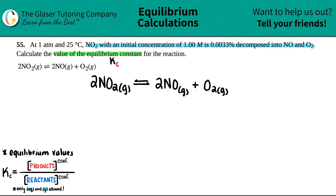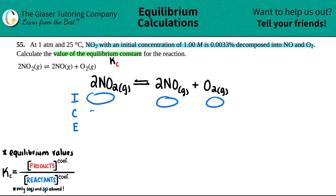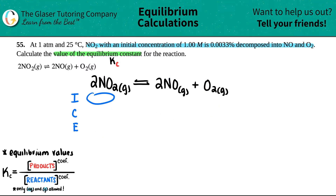To get equilibrium values for all species, we use the ICE table — some call it the RICE table, but I use ICE. Set up a table with rows labeled I, C, E. I stands for Initial, C for Change, and E for Equilibrium. If you see the word 'initial' in an equilibrium problem, you jump straight to an ICE table.